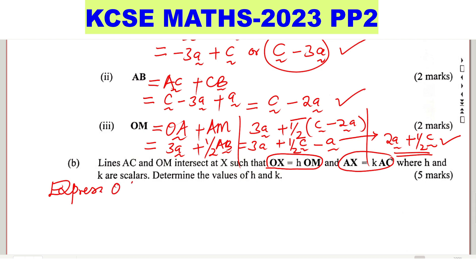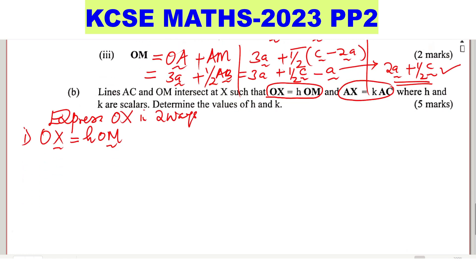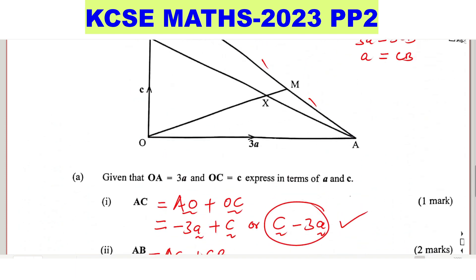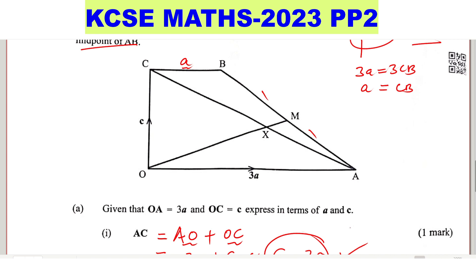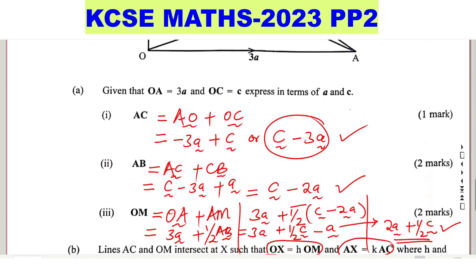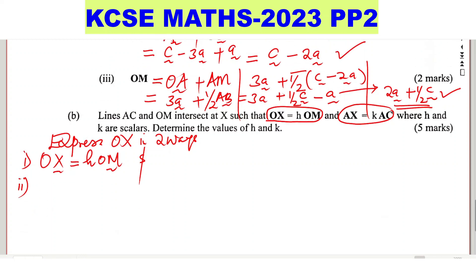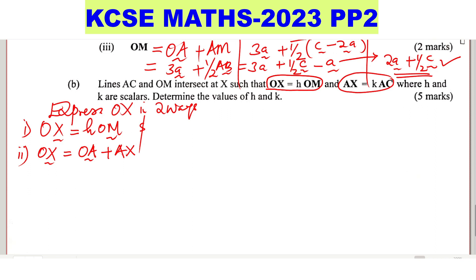So you have to express OX in two ways. And in the first way, you're going to use whatever we have there. OX is equals to hOM. That is the first way. Then the second way of expressing OX and ensuring that you use AX. Just look at the diagram here. So you can use that route OA plus AX to ensure that you use AX. So if you want to express OX and at the same time use AX, you're going to say OX is equals to from O to A, then from A to X. So these are the two vectors that you need. And this one will give you two equations that you're going to solve simultaneously.